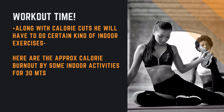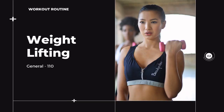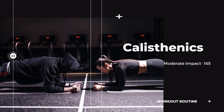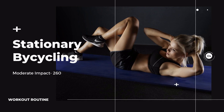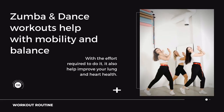You also need to know a little about physical workouts. Along with calorie cuts, you need to do certain indoor exercises. Here are the approximate calorie burnouts for some indoor activities over 30 minutes. Low-impact aerobics burns about 200 calories in 30 minutes, general weight lifting burns 110 calories, moderate calisthenics 165 calories, and bicycling 260 calories.